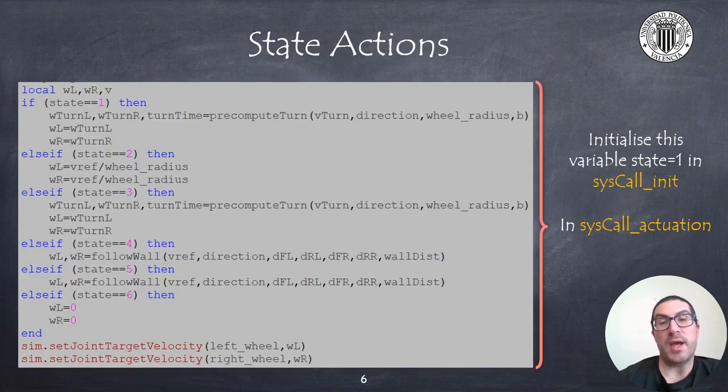Here I show the actions that the robot must perform in each of the states that I mentioned before. This code actually must be implemented within the sysCall_actuation function. Indeed, the state variable that you can see here in this code must be initialized to one in the sysCall_init function. You also see some functions to precompute the wheel splits to turn, to make a turn, or to follow a wall. These functions will actually be explained later.